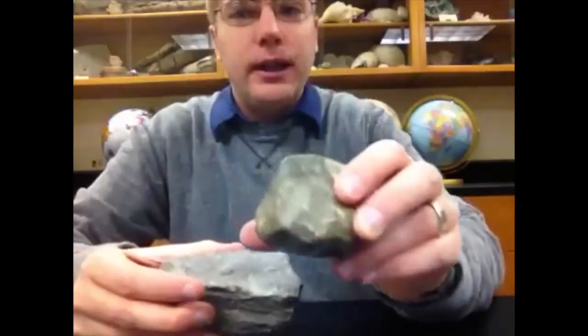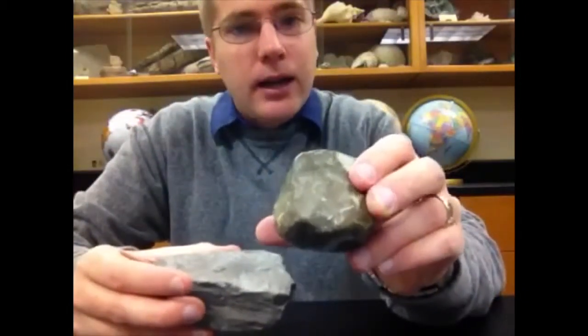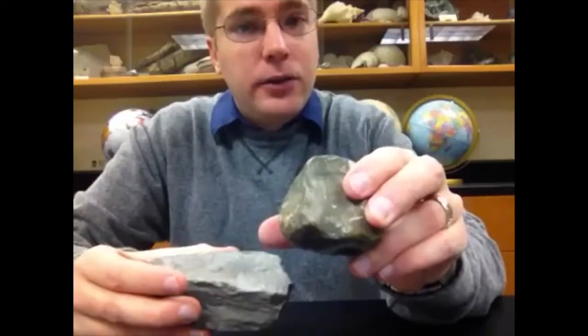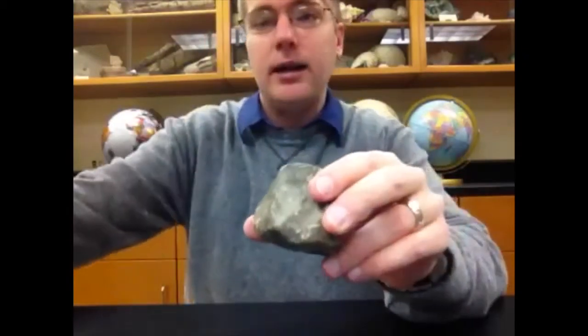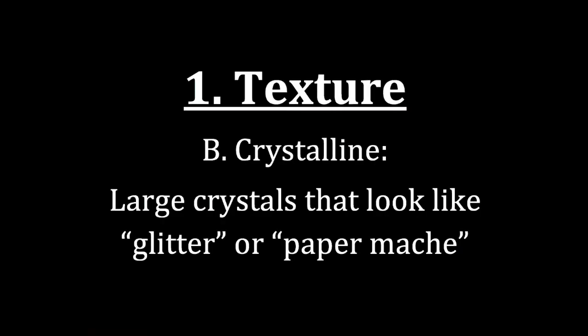So if you don't see any layering or stacking within the rock and it's very fine-grained and smooth, you should think microcrystalline chemical rock is what you're holding in your hand. The second texture that we look at and identify is crystalline. In a crystalline rock, we're looking at large crystals that look like they are glittering.